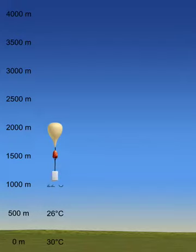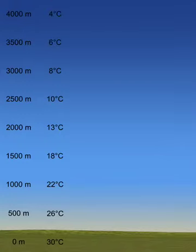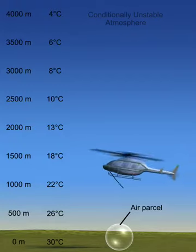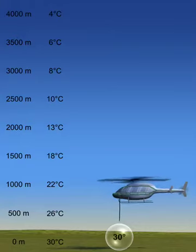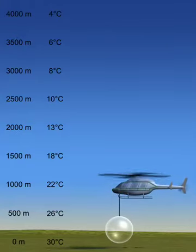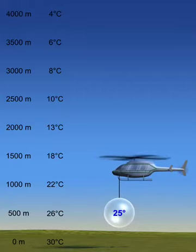A conditionally unstable atmosphere exists when the decrease in air temperature with height falls between the moist and the dry adiabatic rate. A conditionally unstable atmosphere may become unstable if a rising air parcel becomes saturated and a cloud forms.